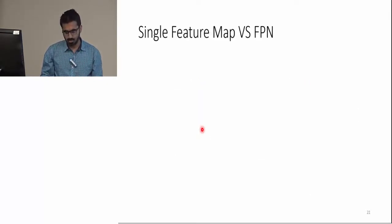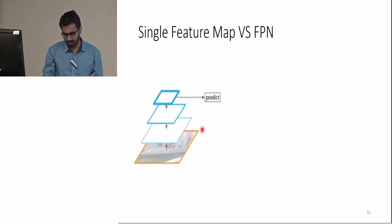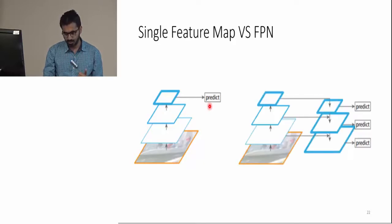Here we have a single feature map versus a feature pyramid network. In single feature map architecture, a given image goes through a series of convolutions and we get a single feature map for prediction. However, in comparison, FPN architecture uses features from multiple convolution layers and we can use any one or a combination of them. It has been shown that this hierarchy of features gives us better predictions.